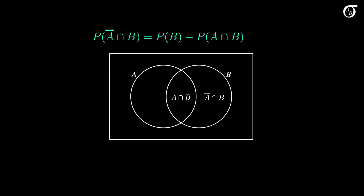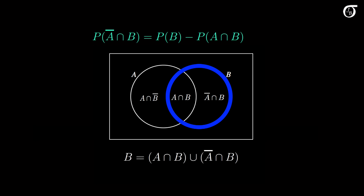Similarly, the region that is just A is the intersection of A with B complement. If we focus in on B, we see that B is made up of two regions: its intersection with A, and its intersection with A complement. So B is the union of these two regions. And since these two regions are mutually exclusive, the probability of B is the sum of the probability of A intersect B and the probability of A complement intersect B. We simply rearrange that in the first step of the proof.